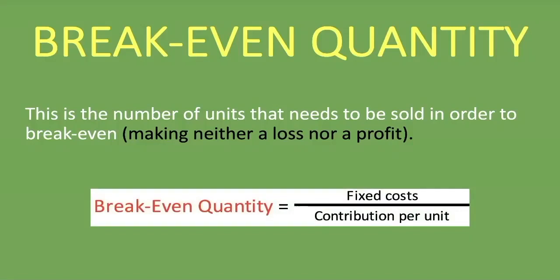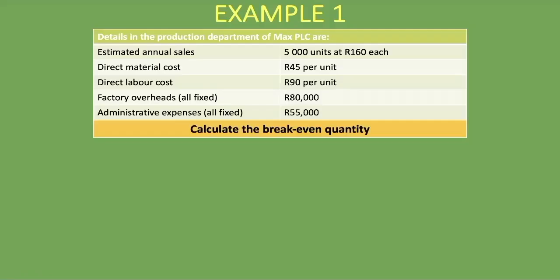Let's look at an example on how to calculate the break-even quantity. We're given details for the production department of Max PLC. Estimated annual sales are 5,000 units at 160 rand each. We have direct material and direct labor, which are our variable costs, and factory overheads which are all fixed, and administrative expenses which are also all fixed — those will be our fixed costs. We are asked to calculate the break-even quantity.